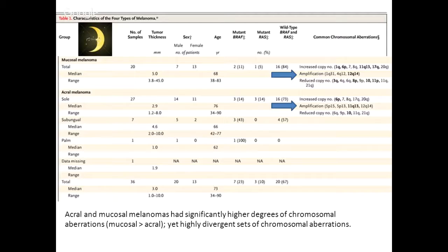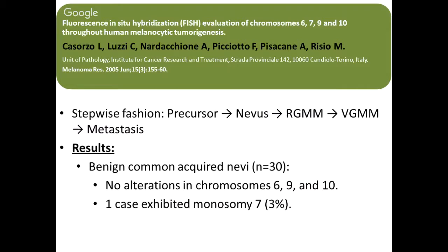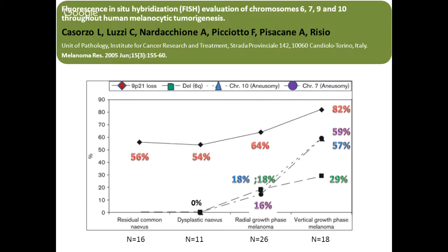Surprisingly, melanomas in sun-protected locations like acral and mucosal sites actually had the largest number of chromosomal abnormalities — the worst mutation profile from a chromosomal standpoint — mucosal more than acral. Also interesting is that these chromosomal abnormalities were divergent: they didn't overlap; they were distinct from one another.